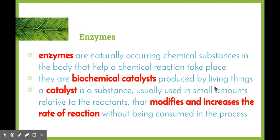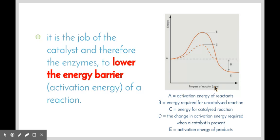Enzymes are naturally occurring chemical substances in the body that help a chemical reaction take place. They are biochemical catalysts produced by living things. This means that they are able to lower the energy needed to start a chemical reaction, which is what a catalyst is. They're usually used in small amounts relative to the reactants, and their job is to modify and increase the rate of reaction without being used up in the process. It is the job of the enzyme therefore to lower the activation energy, or the energy barrier, of a chemical reaction.